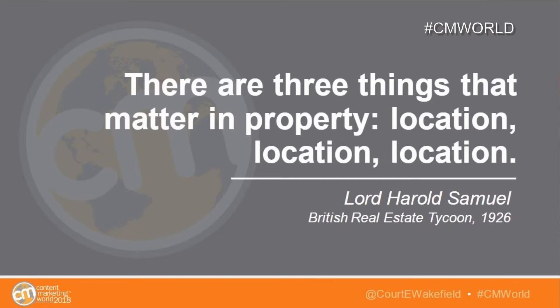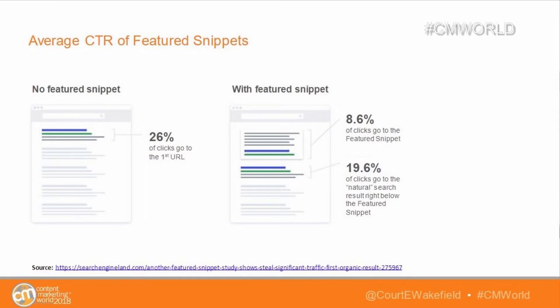So why is this important? First: location, location, location. We've all heard this phrase about real estate, and it applies to the search engine results page too. The people showing up in position two, or position nine, might as well be on page two. Search Engine Land did a study showing that when there's no featured snippet, the first result gets about 26% of clicks. When you add a featured snippet, 8.6% of traffic goes to the featured snippet itself, and 19.6% goes to the first organic result.